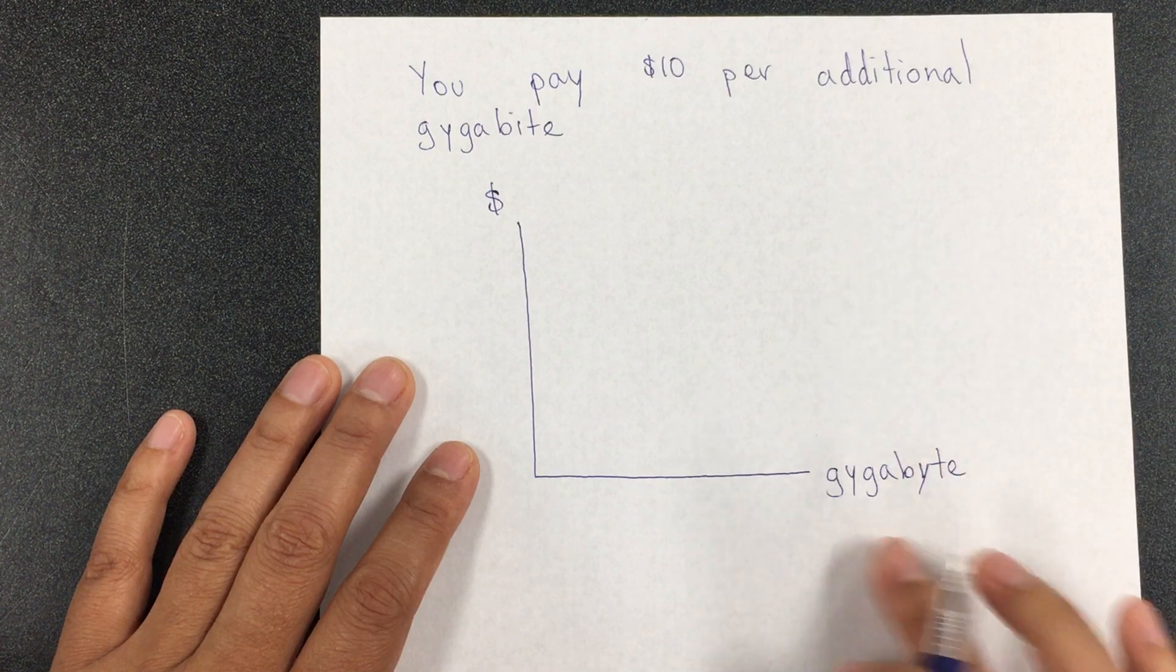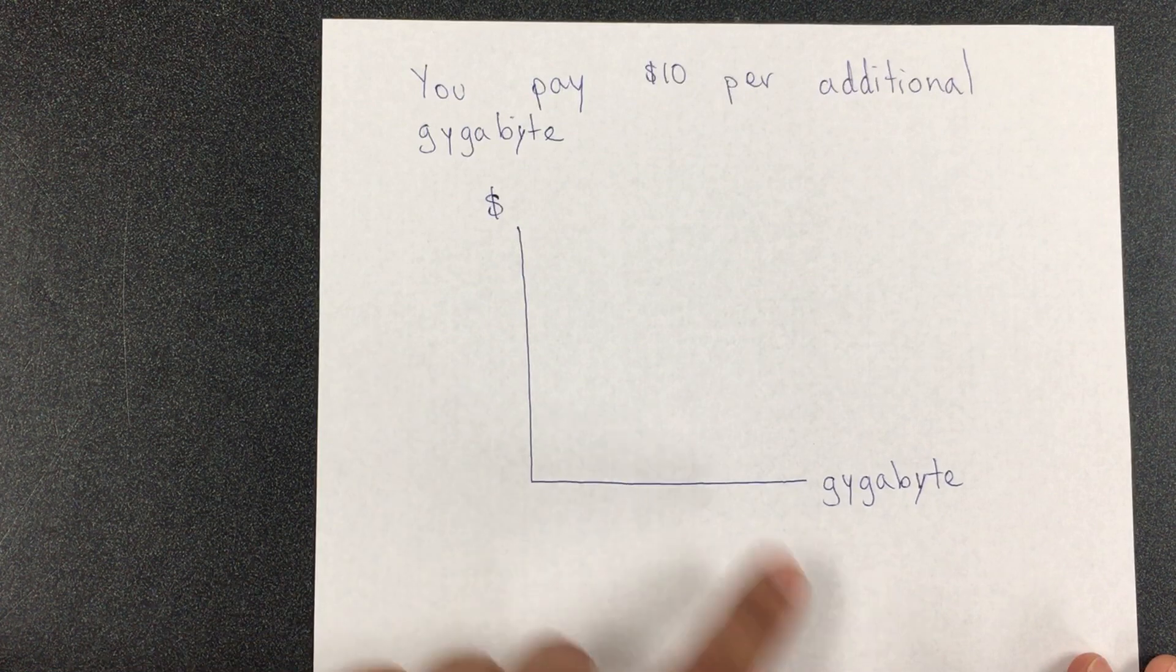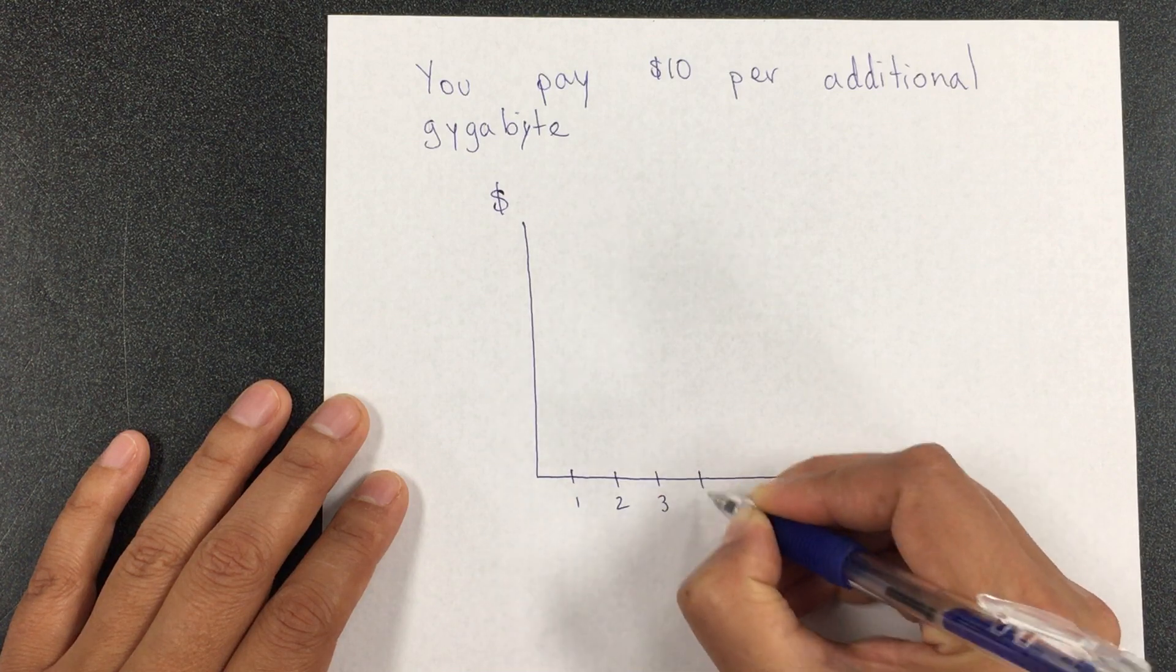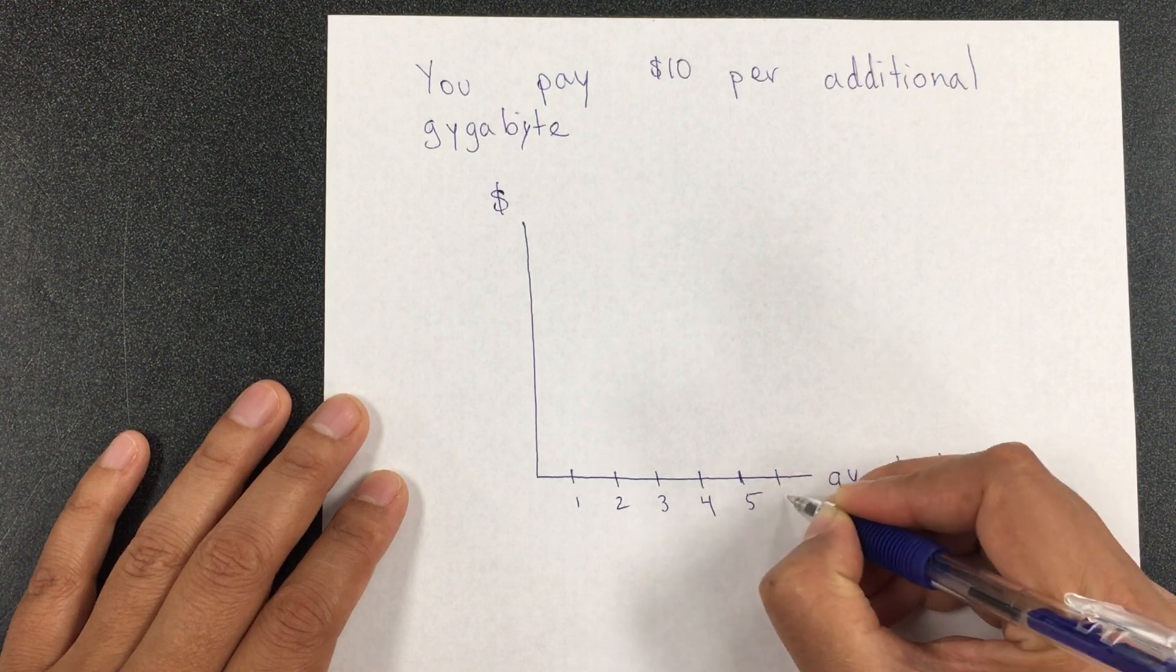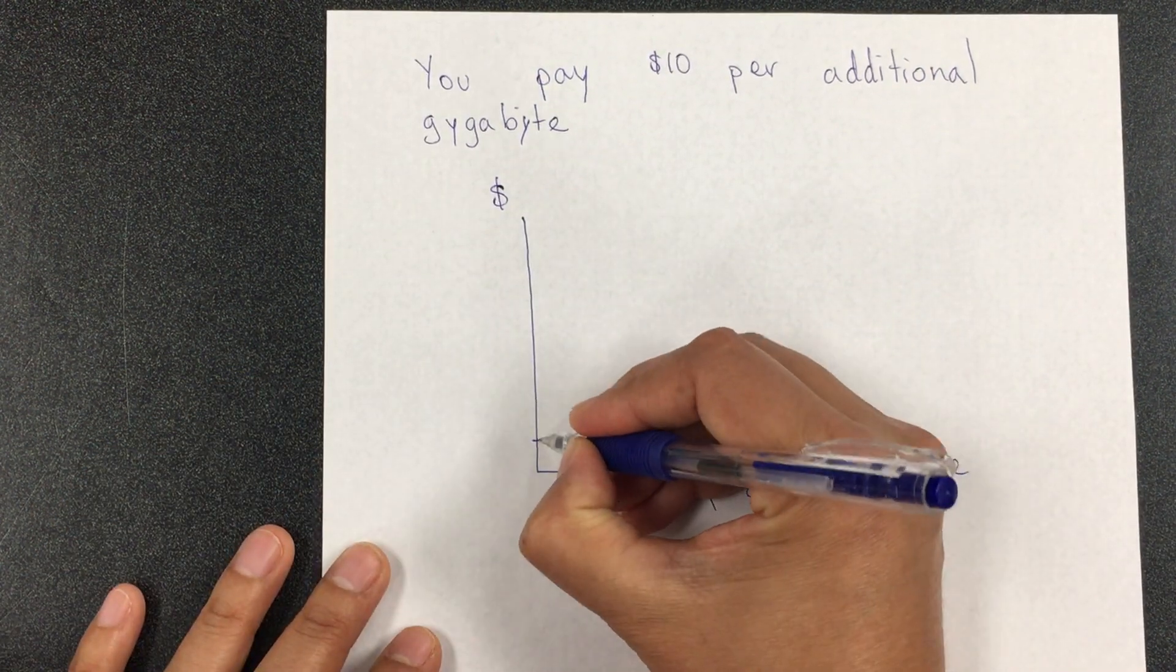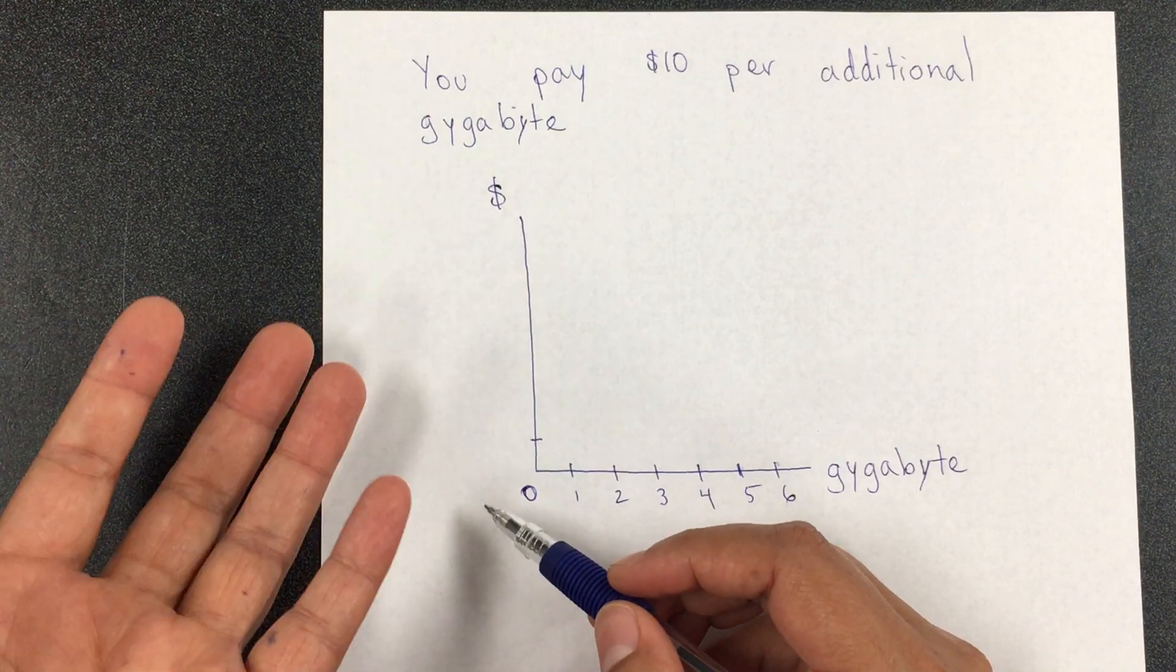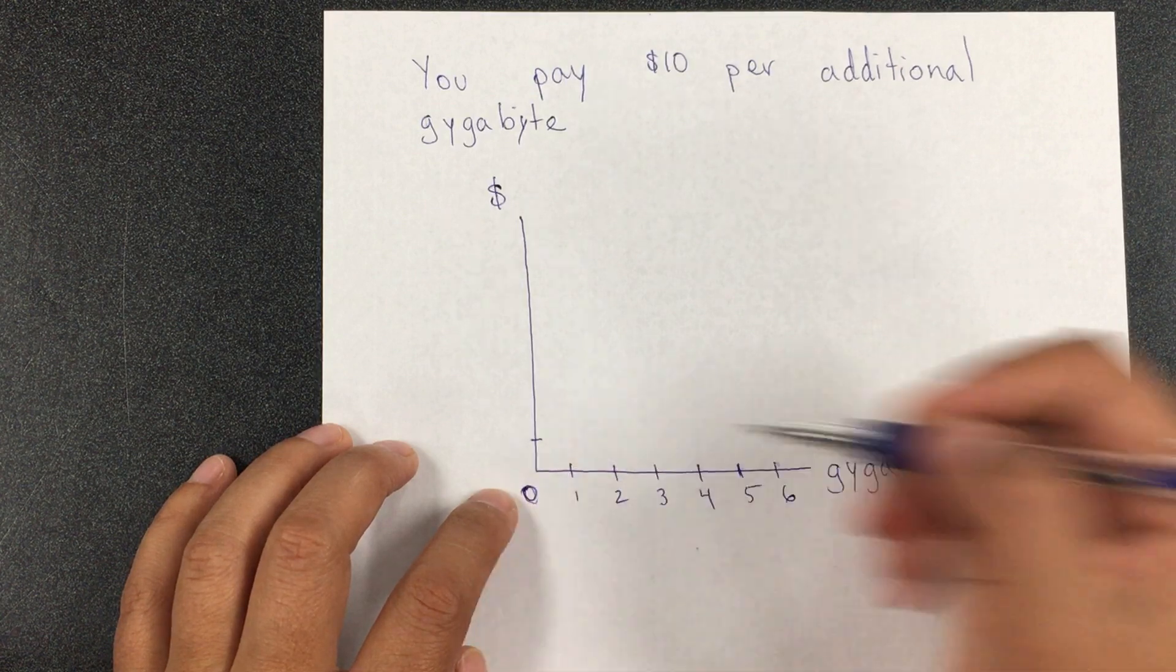On the y-axis, I'm going to put the money that I pay, and here is the additional gigabyte. I'm going to put 1, 2, 3, 4, 5. I don't think we go that far because it can get really expensive. What this means is that, let's say that I spent all my free gigabytes that they give me with the plan, and so I pay $0.